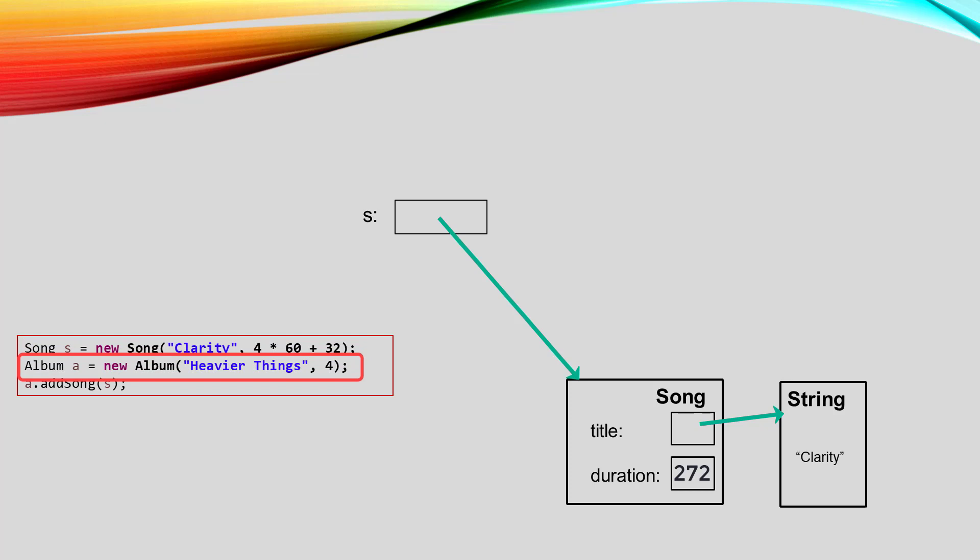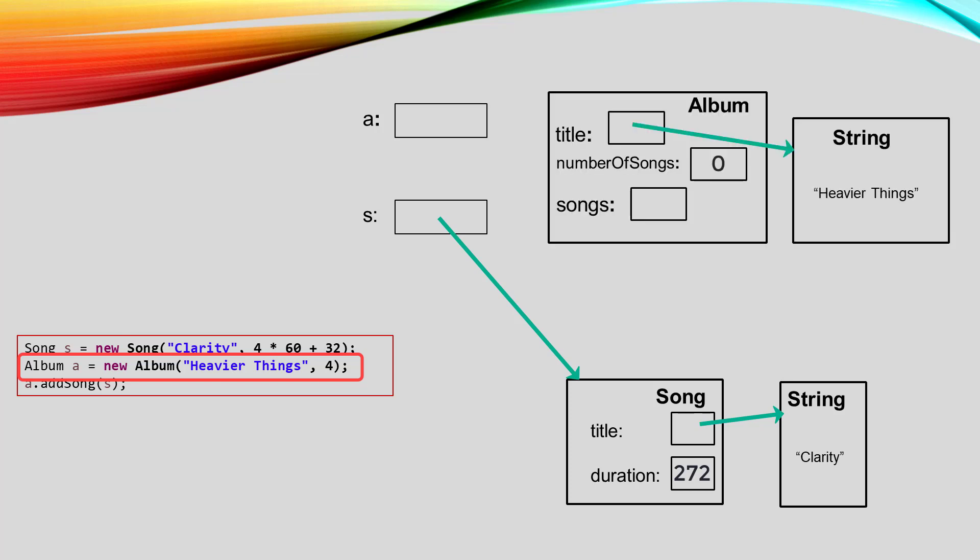Creating an album is a little more complicated. This line declares a variable named a whose type is album. The new statement calls the constructor with two pieces of information: the title of the album and the number of songs the album will hold.